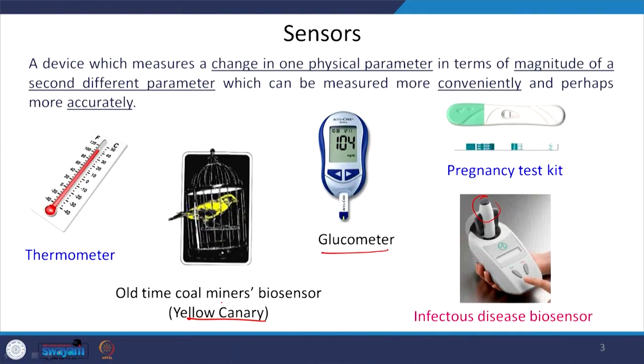Now consider the thermometer or glucometer. The thermometer says how much change in temperature occurred — it tells you there is a change and also how much. So it is quantitative. Similarly, a glucometer tells you there is a change in glucose concentration in blood and how much. It measures concentration — that is both qualitative and quantitative. So we can divide the whole branch of sensors into two parts: qualitative and quantitative.